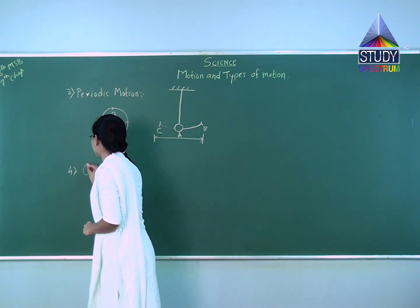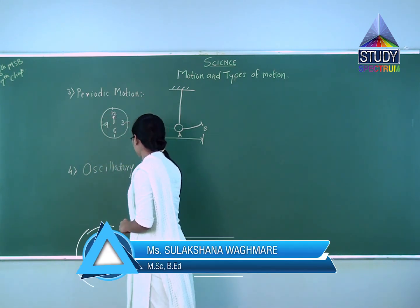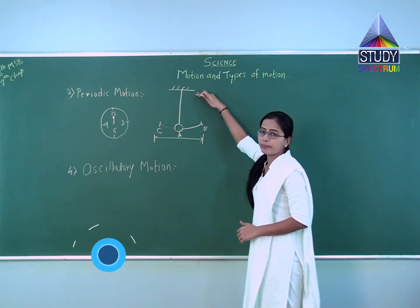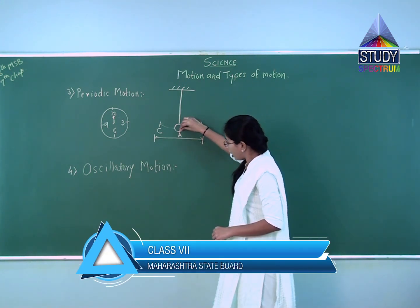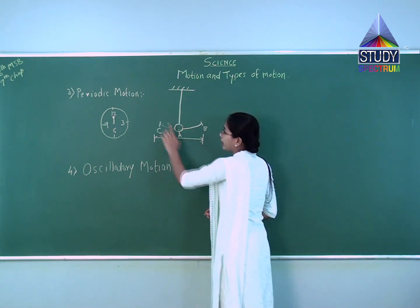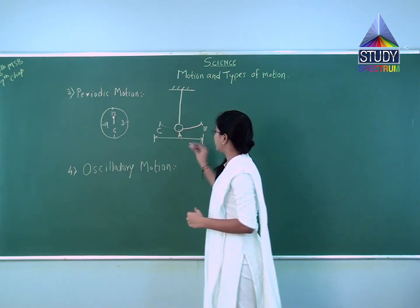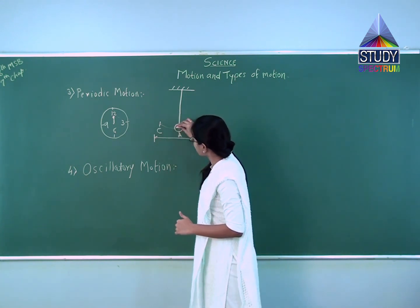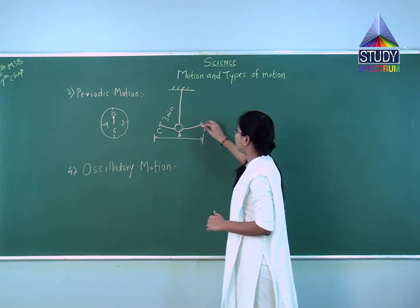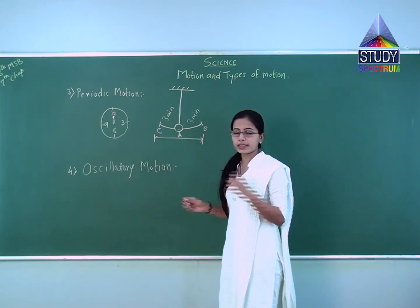The fourth type is oscillatory motion. Returning to the pendulum: the ball goes to point C, comes back to A, goes to B, then comes back to A. We can call this periodic motion if and only if the time taken from A to C is equal to the time taken from A to B — for example, 3 minutes each. Then we can say this is periodic motion, meaning after 3 minutes the motion is repeated.